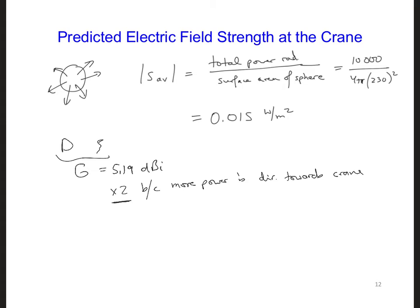If we convert this gain to linear form, because it is given in units of dBi, we are going to take 10 to the power of 5.19 over 10, and we are multiplying it times 2. So we are going to get 6.6.